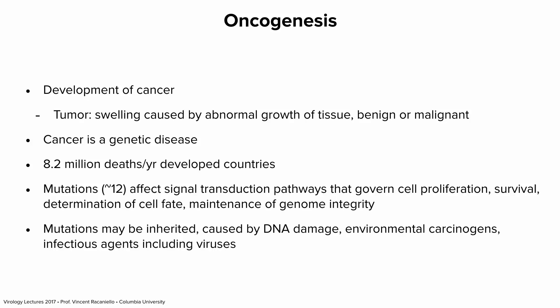Transformation and oncogenesis are two different things. Transformation is changing the properties of cells in culture — including making them immortal — but that's not enough to be cancer. You need more mutations, more changes in the cell than occur during transformation. Oncogenesis is the formation of a tumor that requires additional genetic changes. This animal has a tumor on its back; that tumor started out as a collection of transformed cells that were immortal.